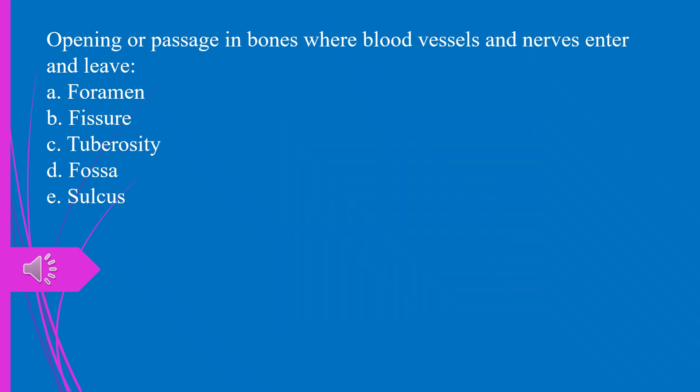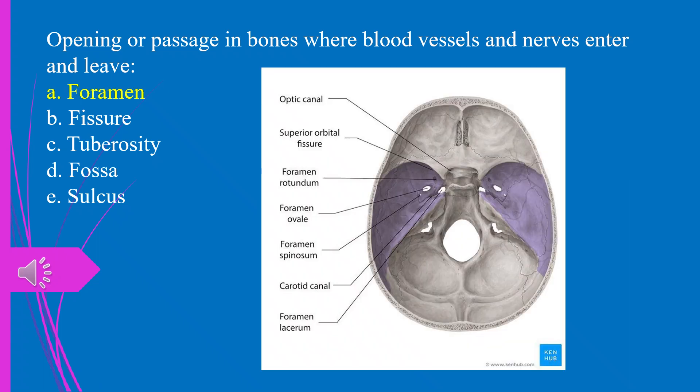Question 8. Opening or passage in bones where blood vessels and nerves enter and leave: a) foramen, b) fissure, c) tuberosity, d) fossa, e) sulcus. The answer is a, foramen.